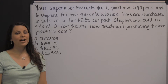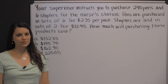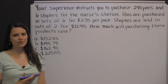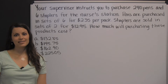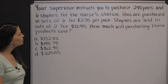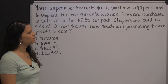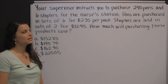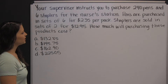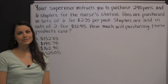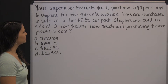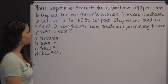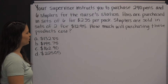The HESI A2 will have a lot of word problems on it, so you need to be prepared. Here's one example of a word problem that you may encounter when taking the HESI: Your supervisor instructs you to purchase 240 pens and 6 staplers for the nurse's station. Pens are purchased in sets of 6 for $2.35 per pack. Staplers are sold in sets of 2 for $12.95. How much will purchasing these products cost?